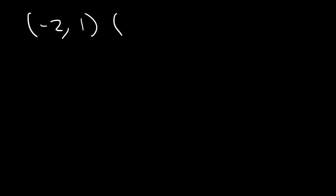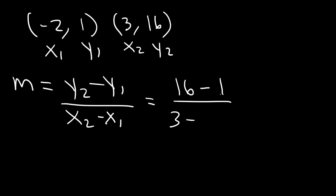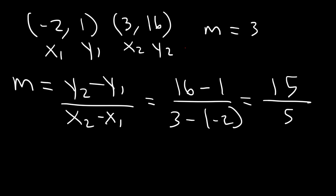Let's work on another example. Let's say x = -2, y = 1 and x = 3, y = 16. Write the linear equation in slope-intercept form. I'm going to use a method different from the last example — using the slope-intercept form directly. But first, calculate the slope. x1 = -2, y1 = 1, x2 = 3, y2 = 16. So the slope = (16 - 1) / (3 - (-2)) = 15 / 5 = 3.